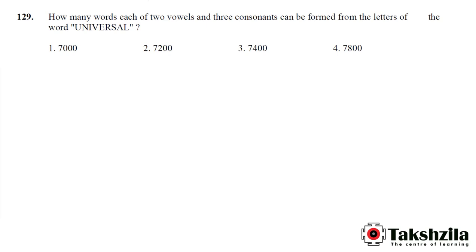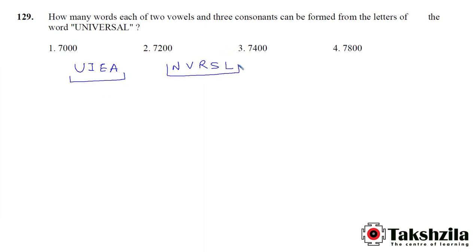How many words each of 2 vowels and 3 consonants can be formed from the letters of the word UNIVERSAL? Let's separate all the vowels and consonants. The letters are U, N, I, V, E, R, S, A, and L. So there are a total of 4 vowels and 5 consonants, with no repetition in the given word. So in our 5-letter word also there is no repetition.